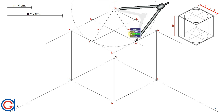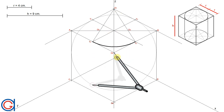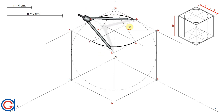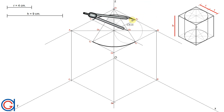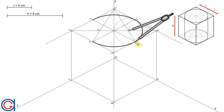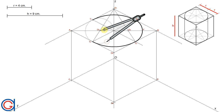Setting the compass on o1, we scribe an arc from t3 to t4 in a thicker line. Then setting the compass on o2, with the length o2 to t1, we scribe an arc from t1 to t2 in a thicker line. To complete the oval, setting the compass on point o4, we join points t2 to t3. Finally, setting the compass on o3, we join points t4 to t1.